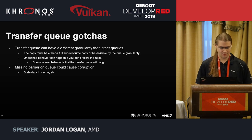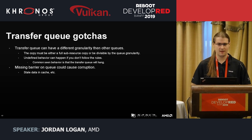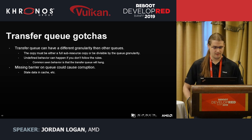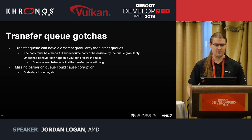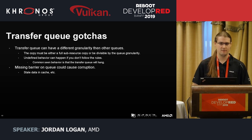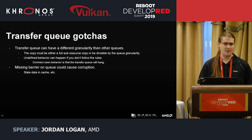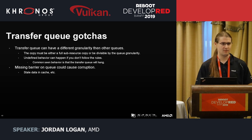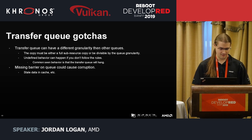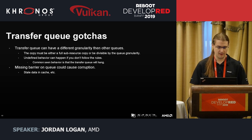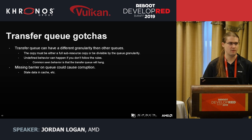There are quite a few gotchas with the transfer queue that we ran into with World War Z. First, the transfer queue can have a completely different granularity than other queues. By Vulkan spec, you must either do a full sub-resource copy or the number of pixels you're copying in your region must be divisible by the queue granularity — you need to query the transfer queue for this. If you don't follow these rules, you can get undefined behavior. A commonly seen issue is that the transfer queue will hang and never finish its command list, eventually causing a TDR. You also have to carefully issue all the proper barriers; otherwise you can get corruption as some caches may have stale data.